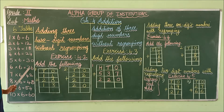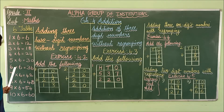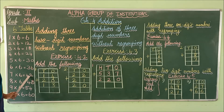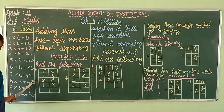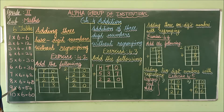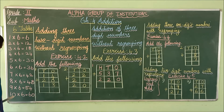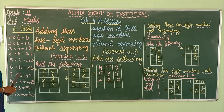6, 6 are 36. 7, 6 are 42. 8, 6 are 48. 9, 6 are 54. 10, 6 are 16.